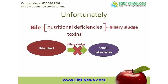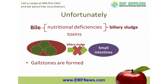Well, that's what's supposed to happen. Unfortunately, with nutritional deficiencies and exposure to certain toxins, bile can thicken and form what is known as biliary sludge. When this biliary sludge forms, it makes it very hard for the gallbladder to get the bile into the small intestines — it's like trying to squeeze glue through a straw. It is out of this biliary sludge that gallstones are formed.